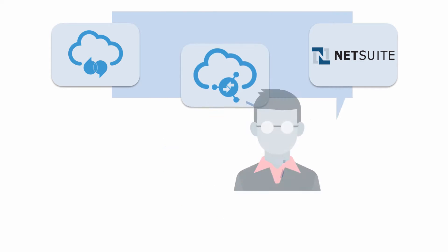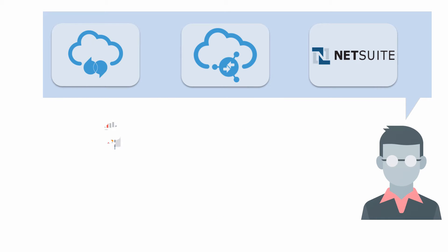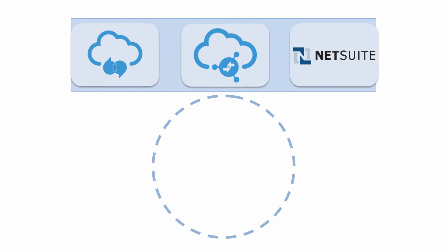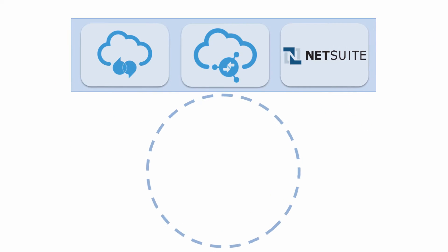Bob needs to synchronize account creation so that every time an organization is created in Oracle RightNow, an account also gets created in NetSuite. To complete this integration, Bob performs several tasks in ICS.